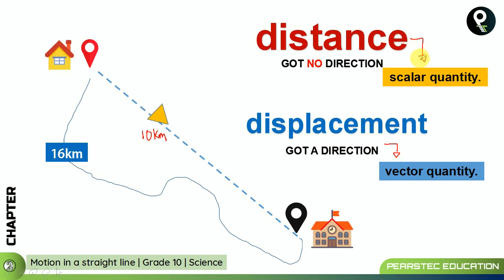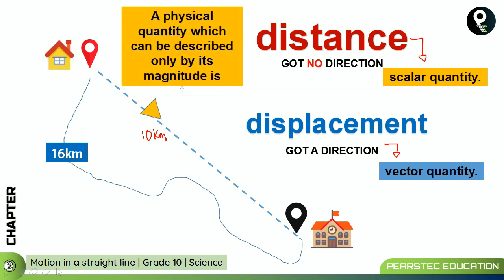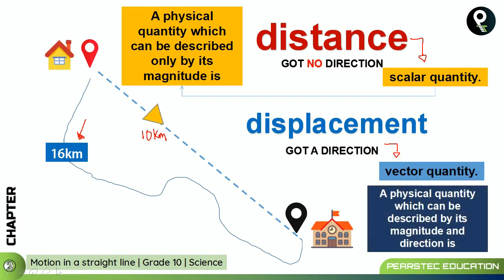A scalar quantity is a physical quantity that can be described only by its magnitude. So distance, being scalar, is simply stated as 16 kilometers. A vector quantity is a physical quantity that can be described by both its magnitude and direction — for example, southeast, northwest, or northeast. Displacement is a vector quantity. Remember: vector has magnitude and direction; scalar has only magnitude.